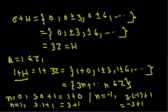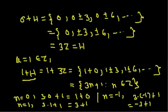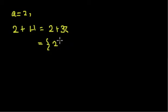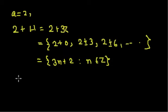Now let A = 2. Then 2+H means 2+3Z, which gives elements 2+0, 2+(−3), 2+(−6), and so on. Looking carefully, all elements are of the form 3n+2 for n in Z. So 2+H is the collection of all integers of the form 3n+2.